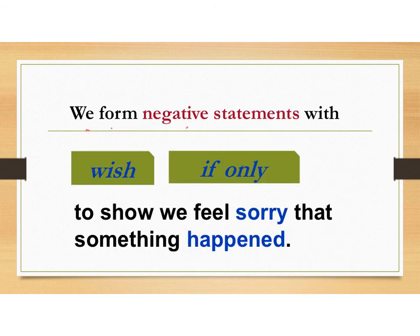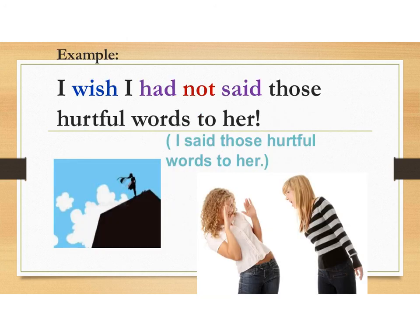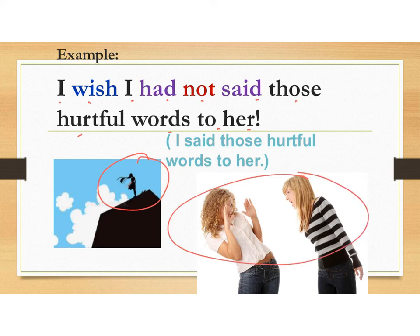We form negative statements with 'wish' or 'if only' — negative means you have the 'not' — to show we feel sorry that something happened. Example: I wish I had not said those hurtful words to her. So it means I said those hurtful words to her. 我希望我沒有說到那些那麼傷害她的說話，亦都代表其實你有講到。